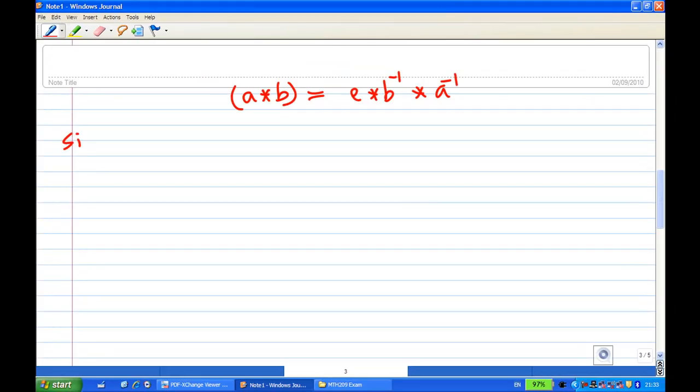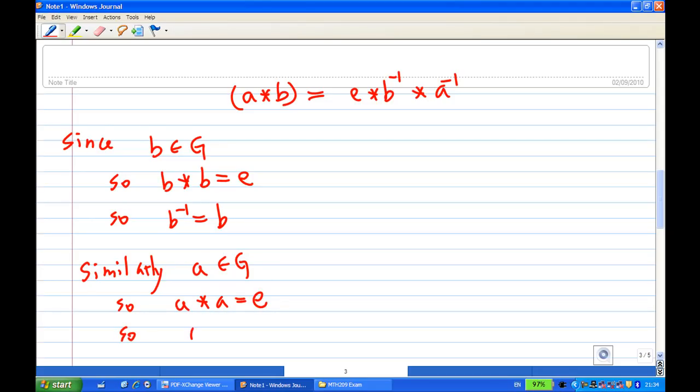However, since b belongs to G, so b times b is e. So b inverse is b because we know b times b inverse is e. Similarly, we know that a belongs to G, so a times a is equal to e. We are given this. So a inverse must be a.